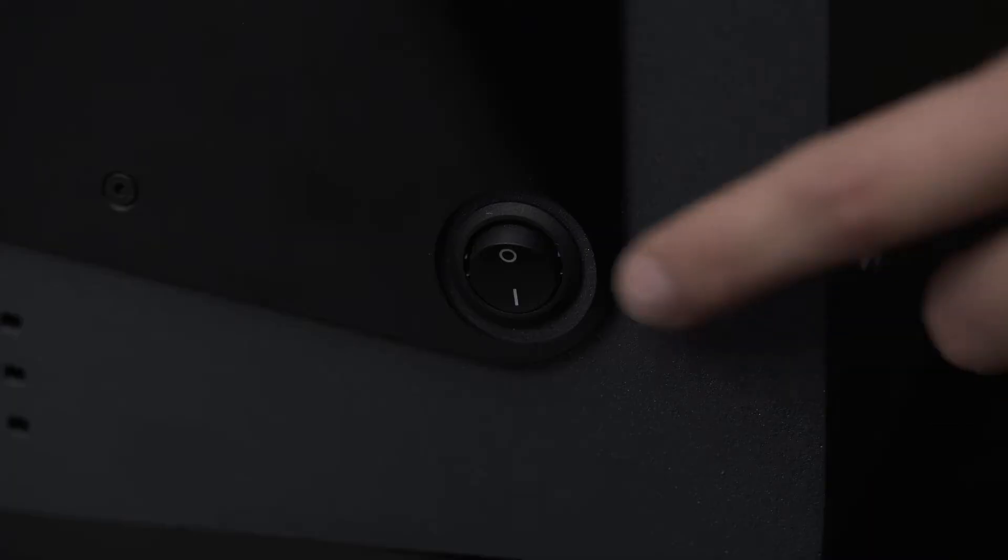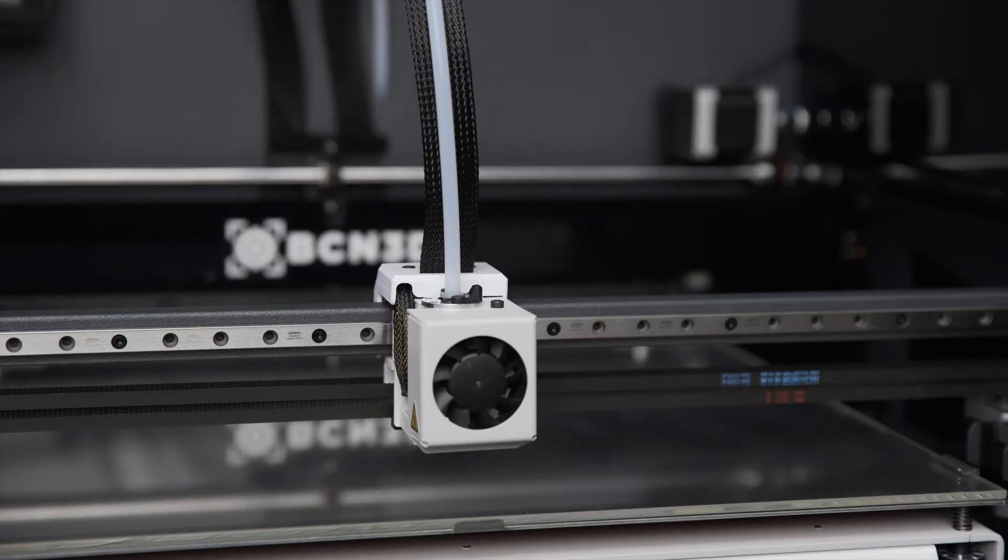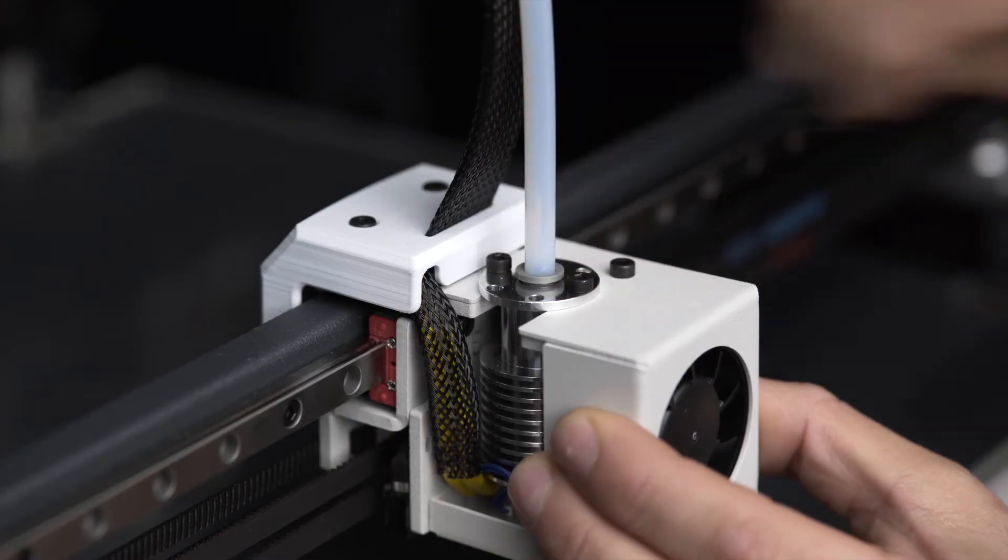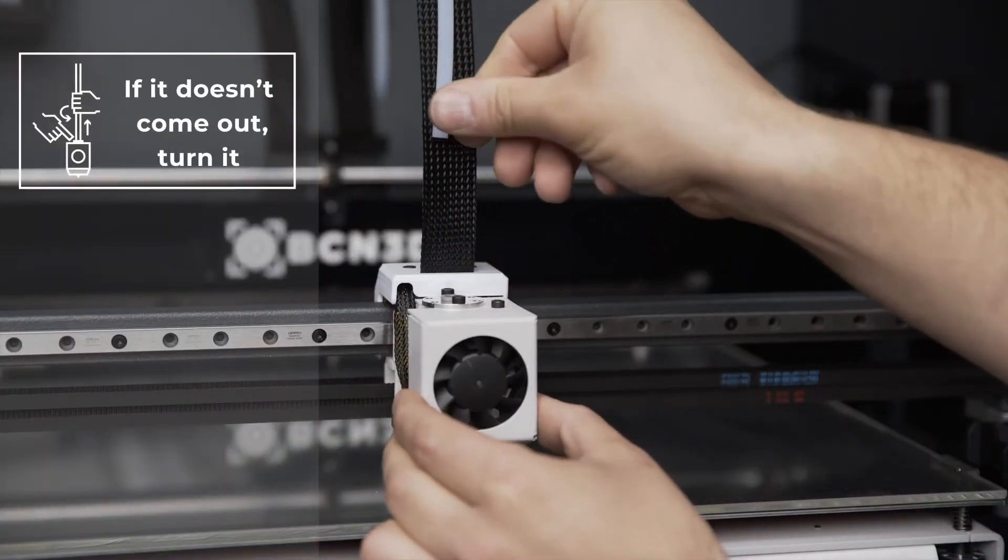Turn off the printer. You can now disconnect the Bowden tube. To do this, start by removing the coupling clip. Then while pressing down on the fast connector, slightly press in the Bowden tube and then pull it.